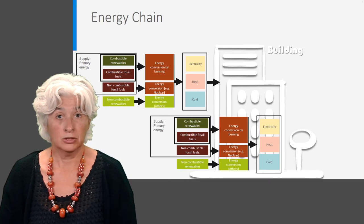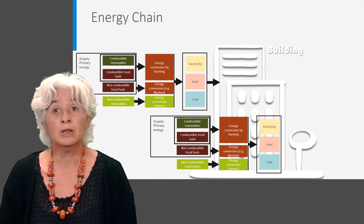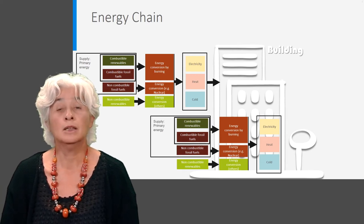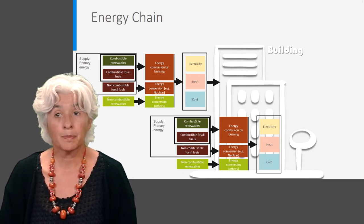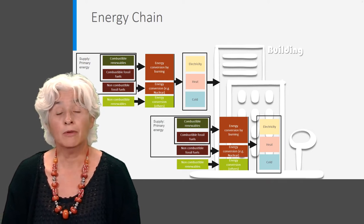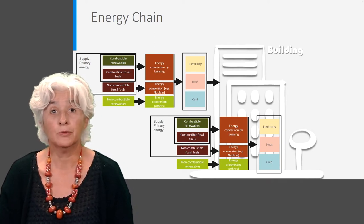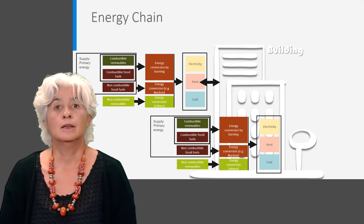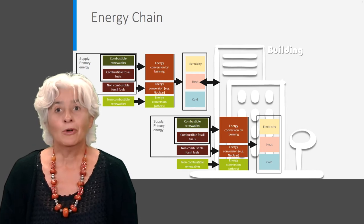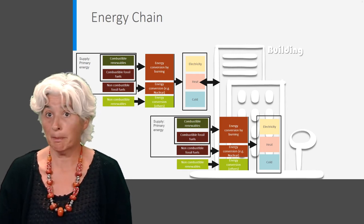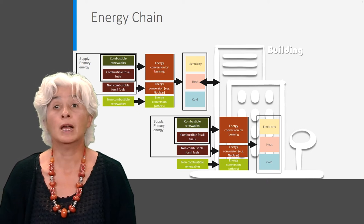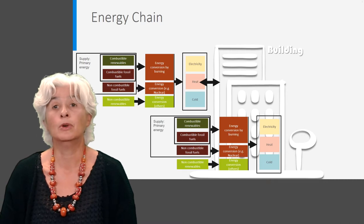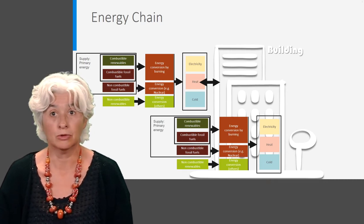What we haven't shown yet in this energy chain is the possibility to generate energy in the building itself or on the building site and to transport and sell it to the grid. It is possible to deliver energy back to the grid and for the building itself to act as an energy producer. An example of this would be if a building has a lot of solar panels and does not use all the electricity they generate — it is technically possible to sell this surplus electricity to the grid.